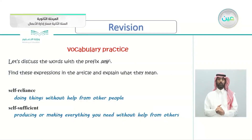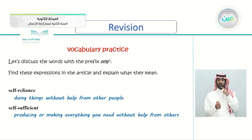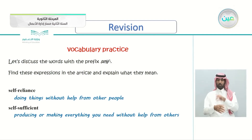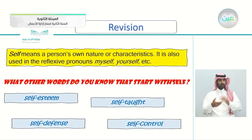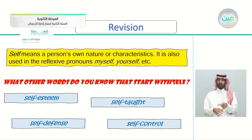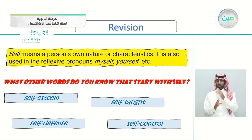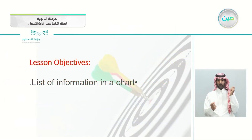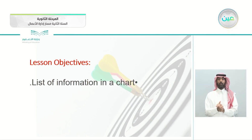We also reviewed vocabulary with the word 'self': self-reliance means doing things without help from other people; self-sufficient means producing or making everything you need without help from others. 'Self' refers to a person's own nature or characteristics and is also used in reflexive pronouns like 'myself' or 'yourself.' Examples include self-esteem, self-defense, self-taught, and self-control.